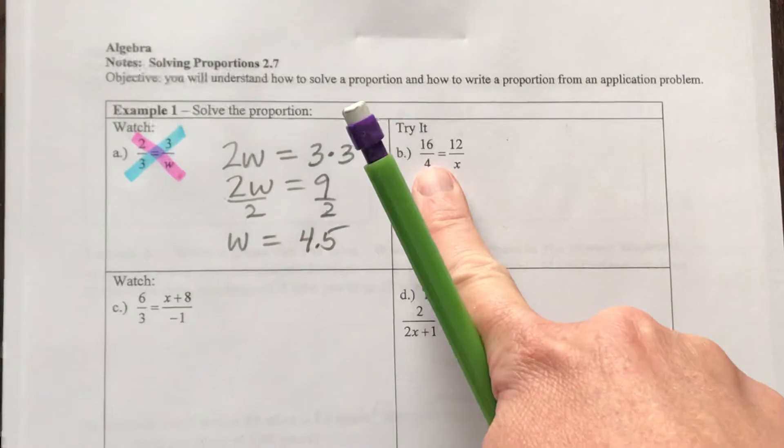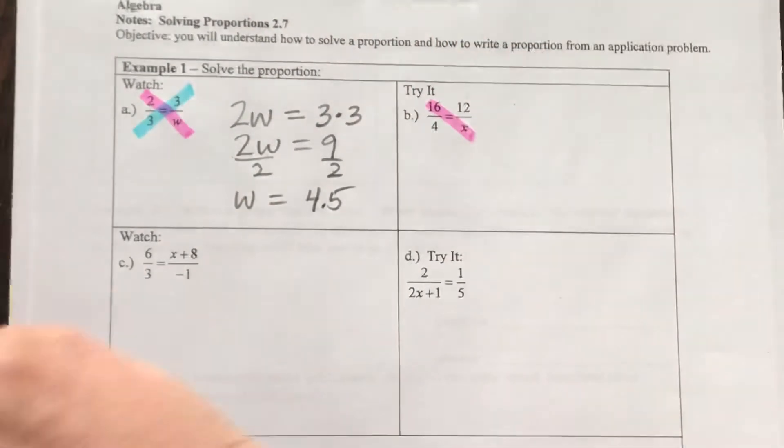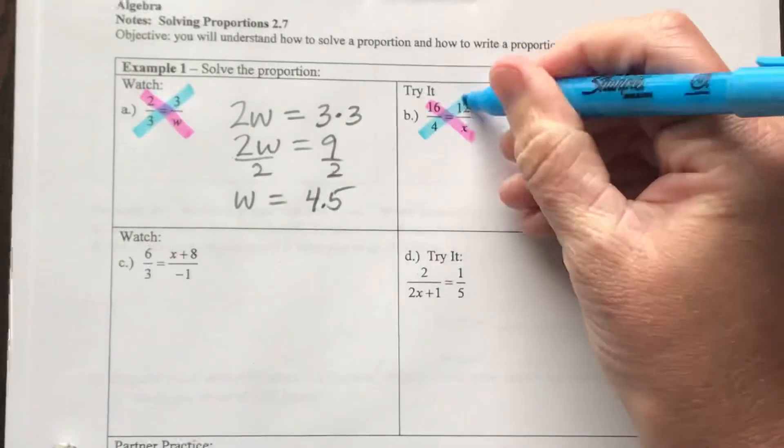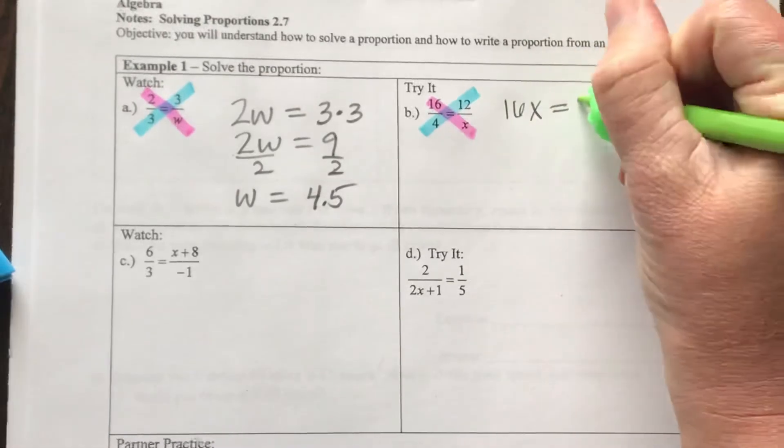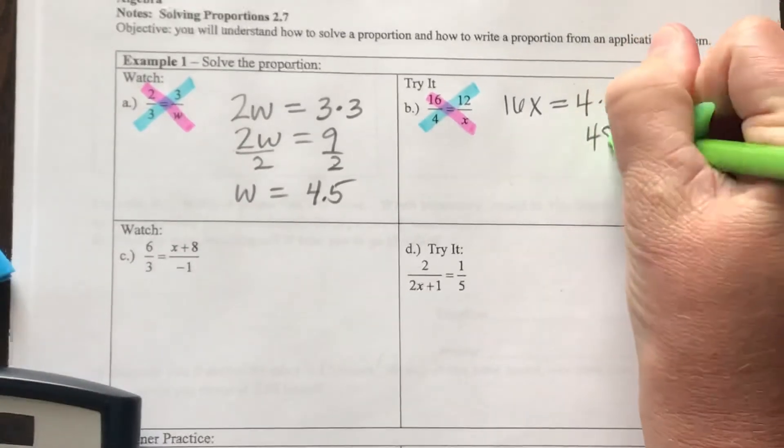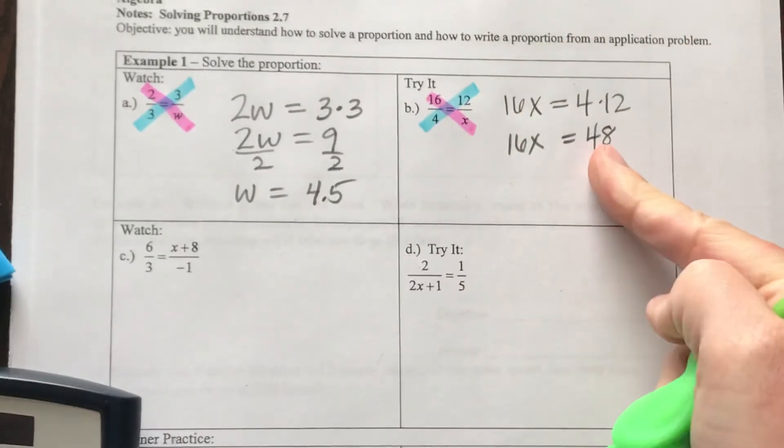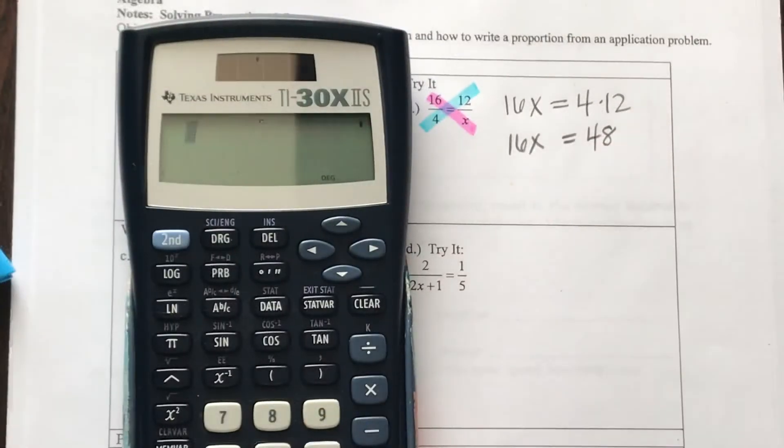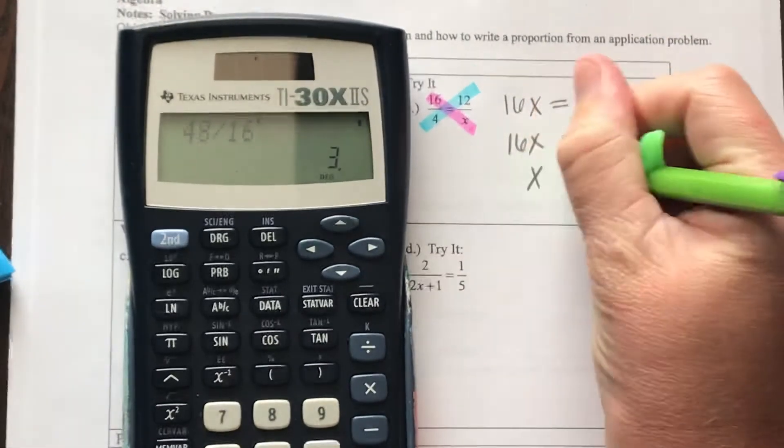Now, in the next example, if I were to cross multiply, I would have 16 times X is equal to 4 times 12. So if you need to get out your calculator, go ahead and do that. But 4 times 12 is 48, and 16X will be equal to that. So now if I divide both sides by 16, I get an answer of 3.